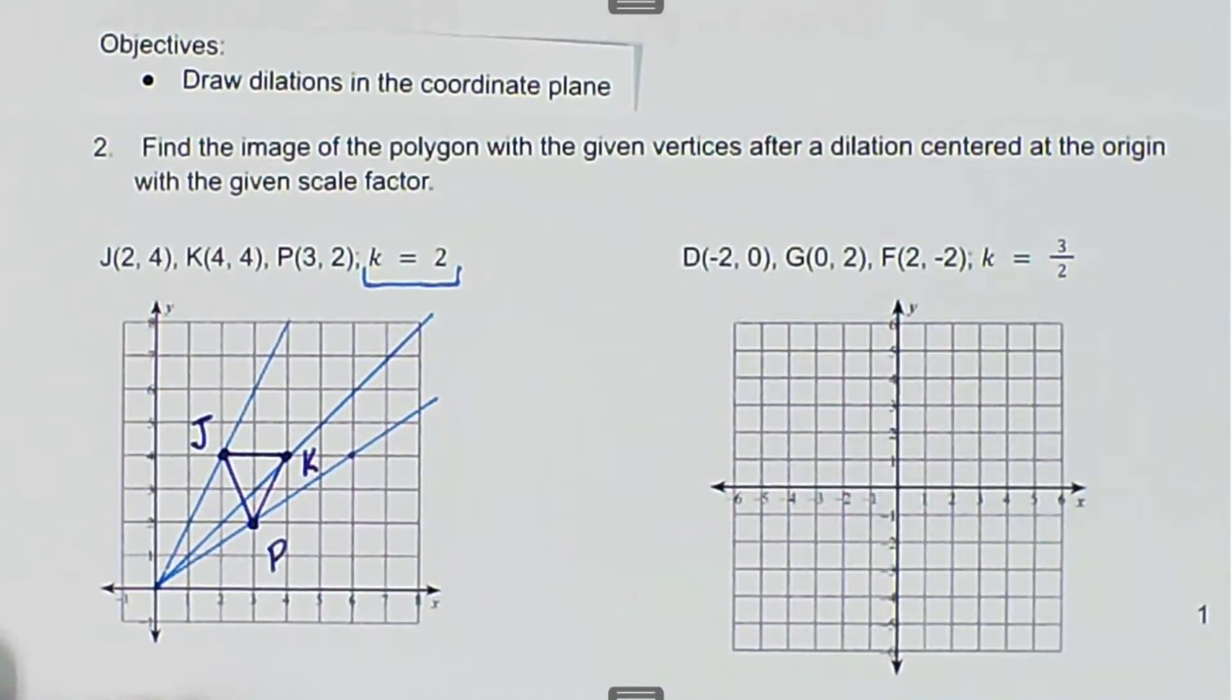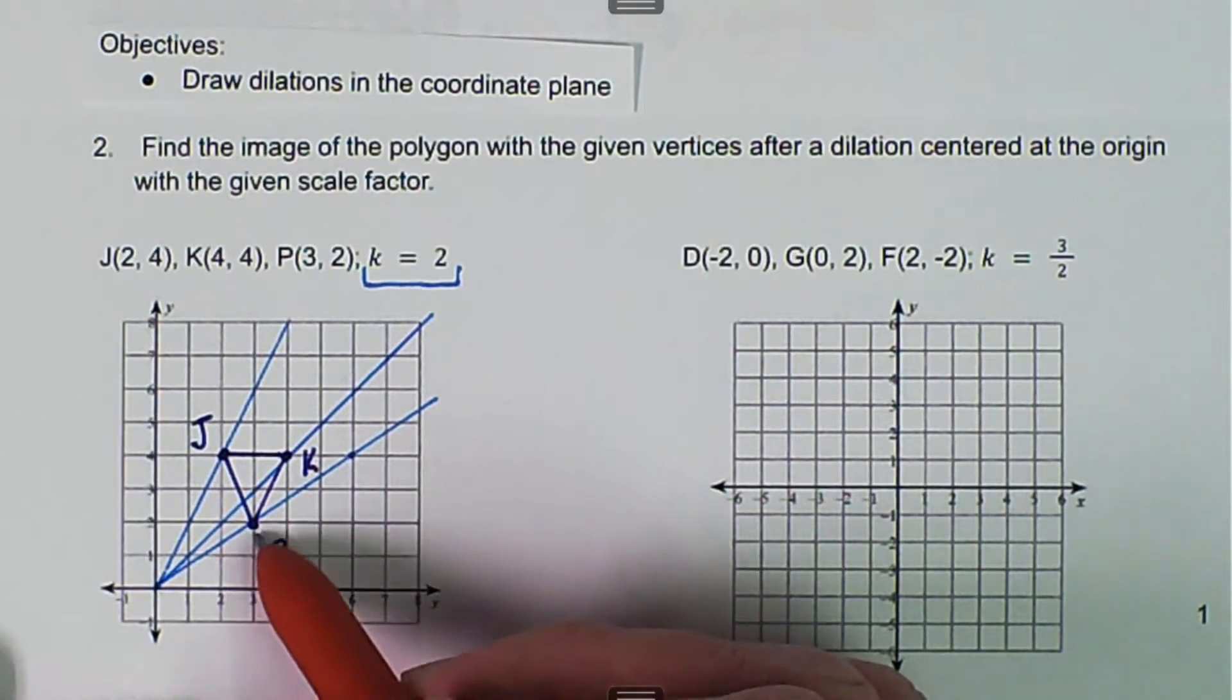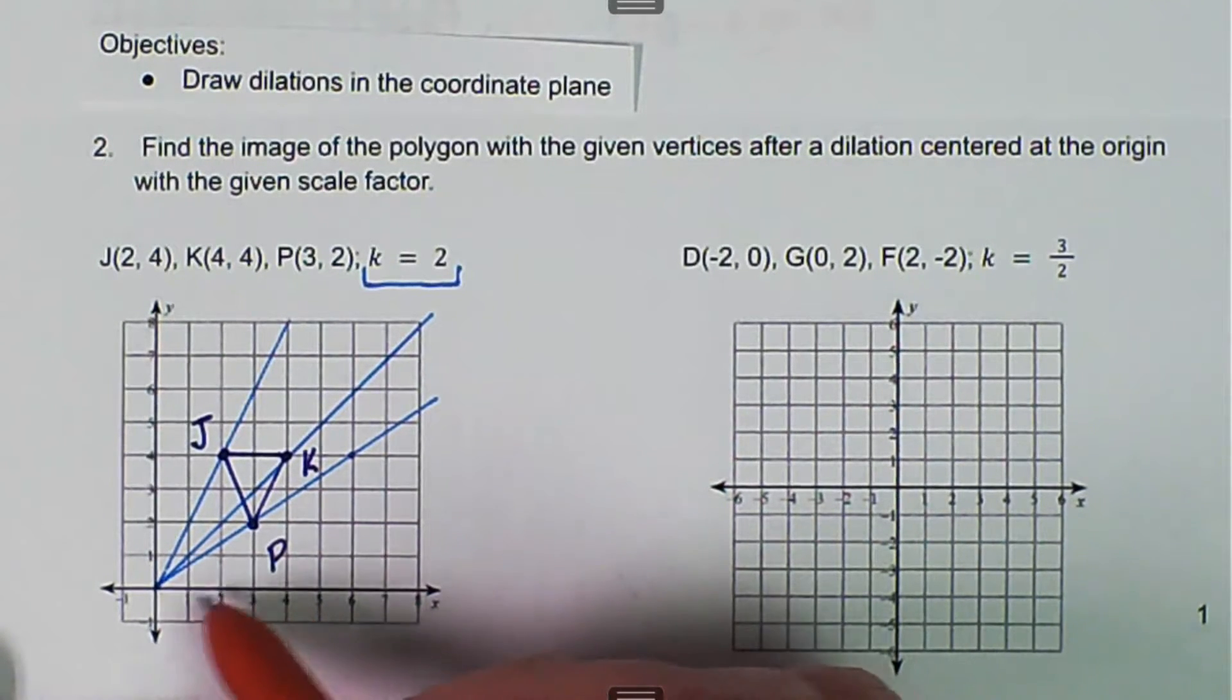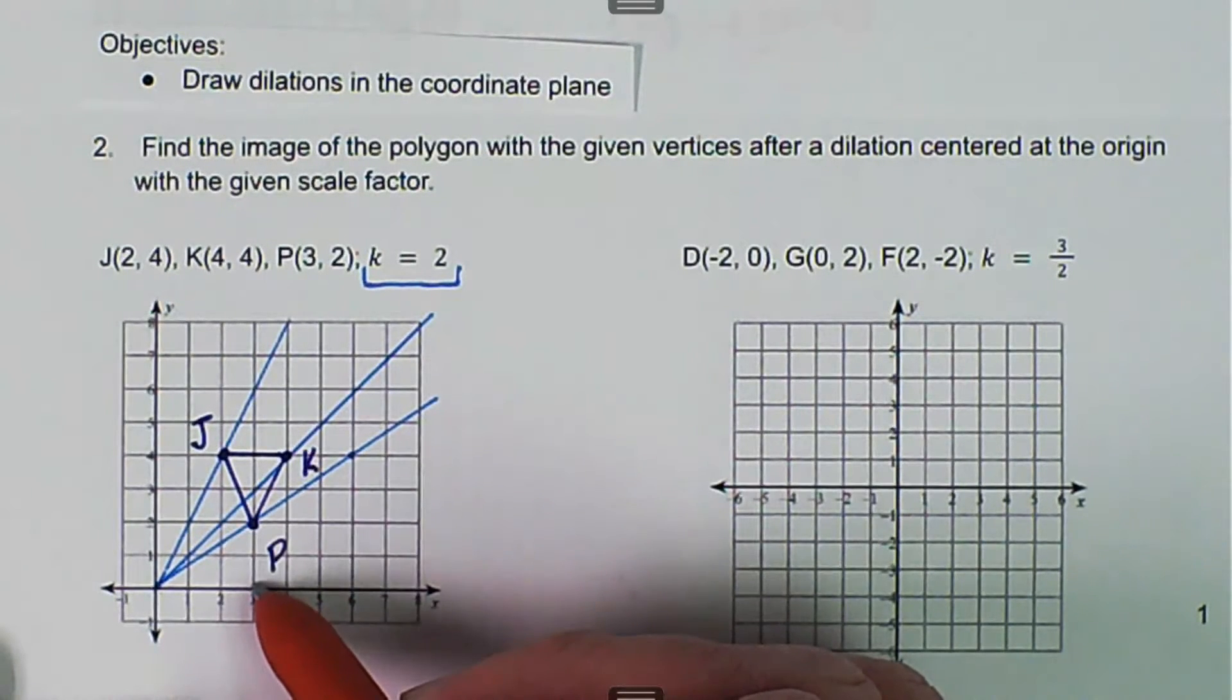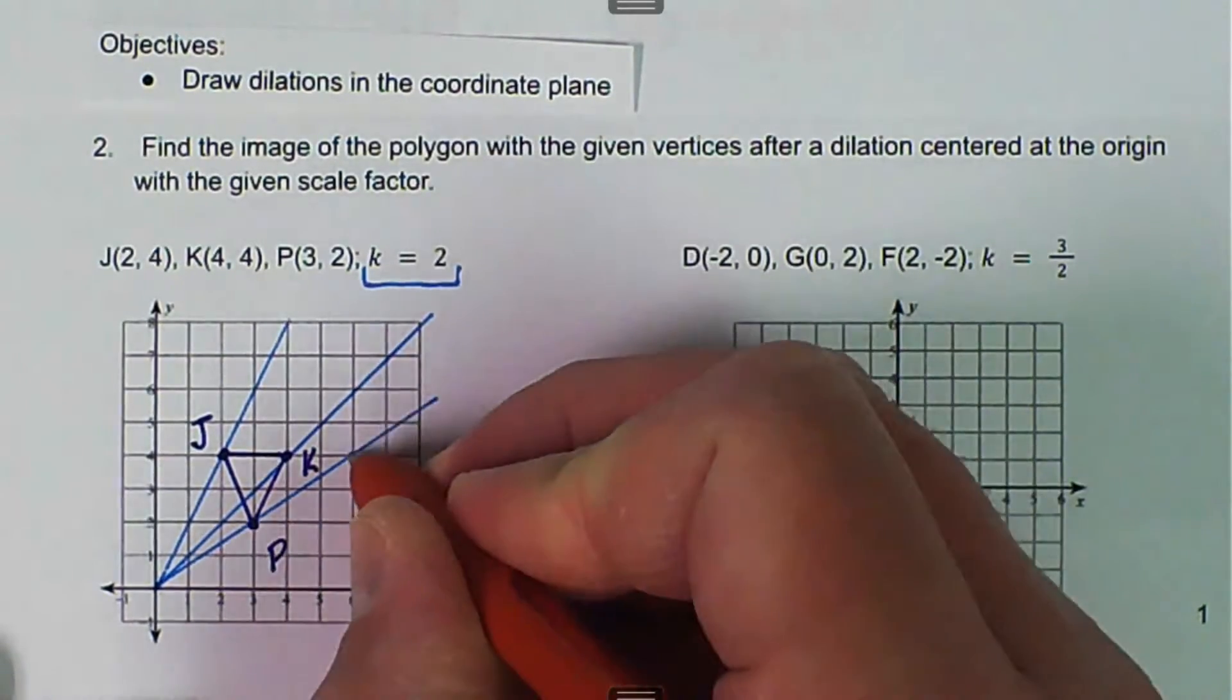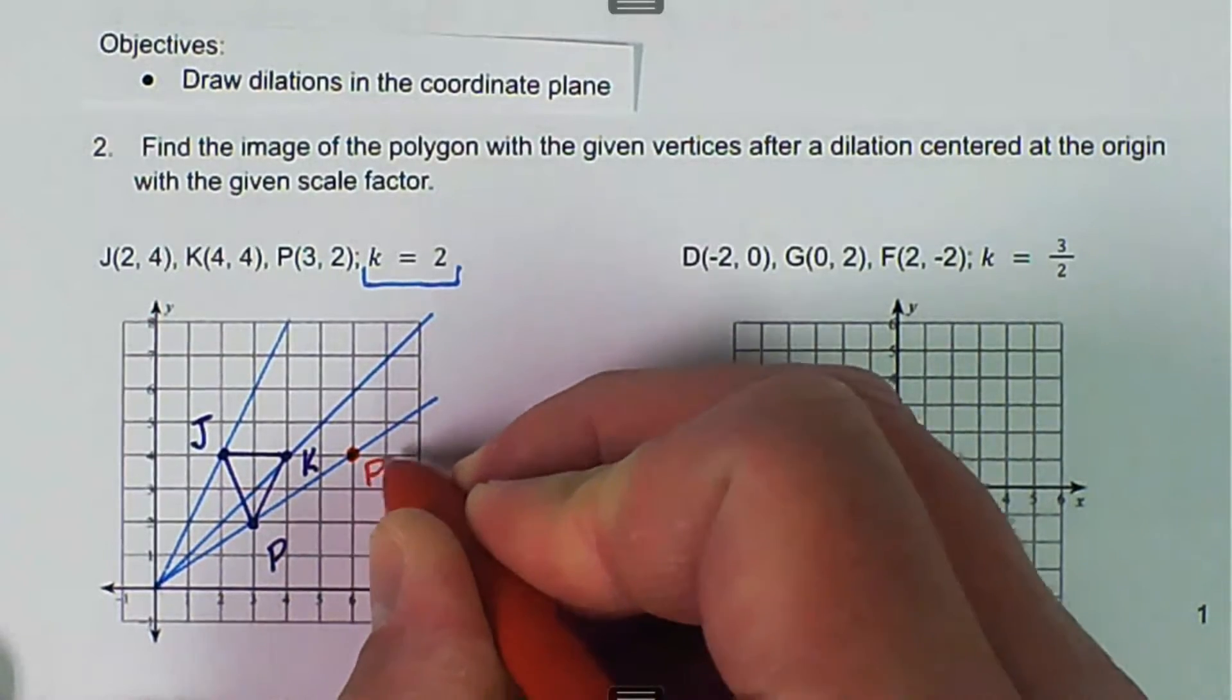Now all I have to do is count. So it's scale factor 2, so everything has to be doubled. So there's two ways you can do it. You can say, I'm going to go over 3, up 2. So what is 3 doubled? 3 doubled would be 6. And then go up 2. 2 doubled would be 4, so over 6, up 4. And we can see right there, we have point P prime.